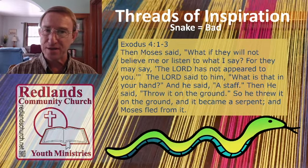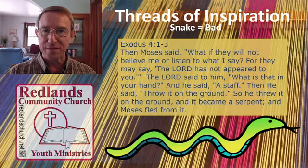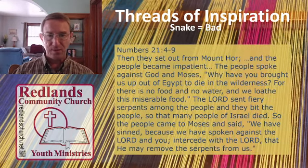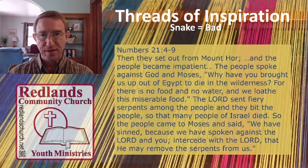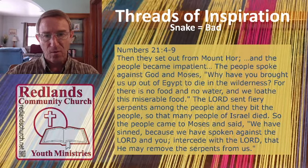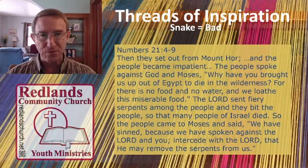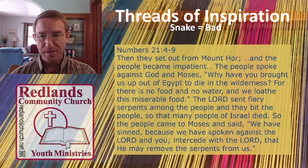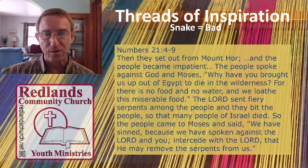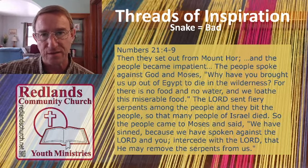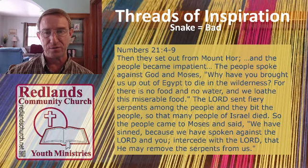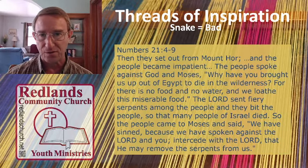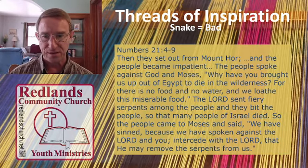But then there's something else that goes on with Moses in the desert with snakes that's a fascinating one. Turn to Numbers chapter 21. The people of Israel set out from Mount Hor, and the people became impatient — they didn't like the food they were eating. They spoke out to Moses, crying out, whining to God: 'Why have you brought us up out of Egypt to die in the wilderness?' Basically they're saying they'd rather be slaves than be free out here — they'd rather have the food of Egypt and a whip at their backs than be free.